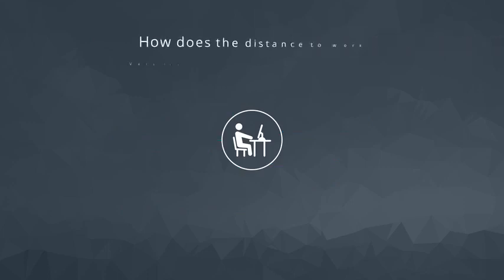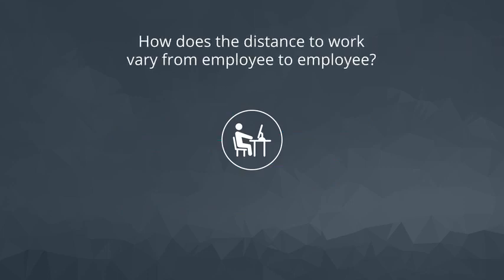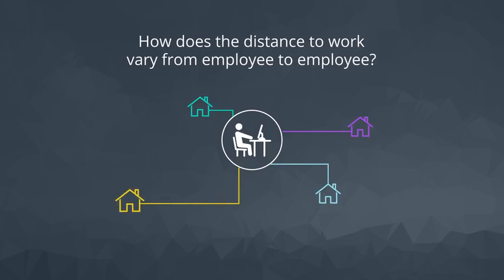But now we want to know how the distance to work varies from one employee to the next. We could use the five number summary as a description, but if we wanted just one number to talk about the spread, we'd probably choose the standard deviation.